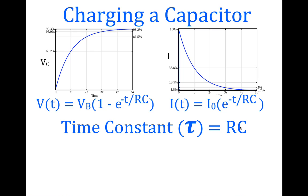Because each graph is expressed in time constants, for any combination of resistor and capacitor, after one time constant the voltage across the capacitor will always be 63.2% of the maximum. For two time constants it's 86.5%, for three it's 95%, for four it's 98.2%, and after five time constants — when we consider the capacitor to be fully charged — the voltage is 99.3% of the maximum, which is the battery voltage. This is an exponentially increasing curve.